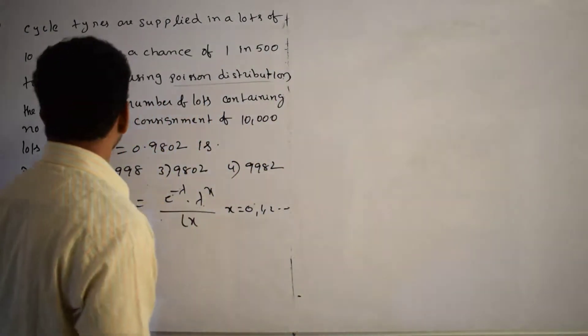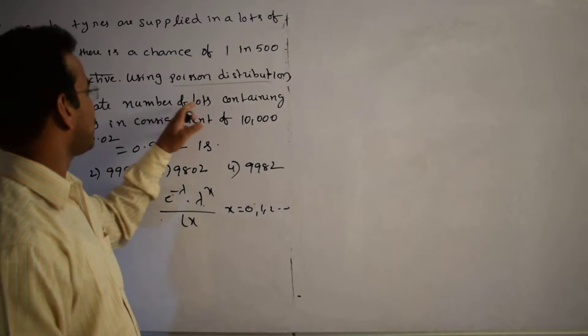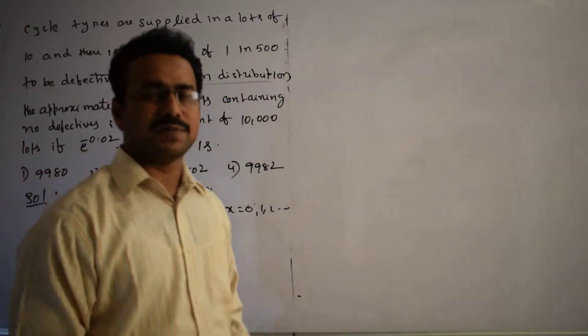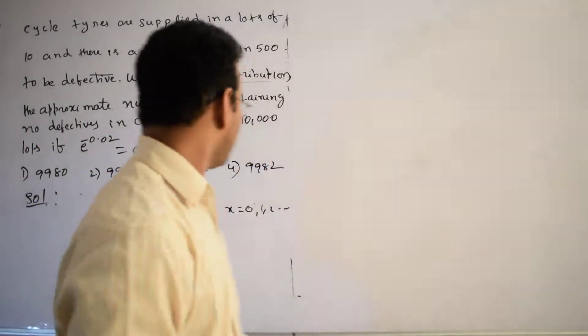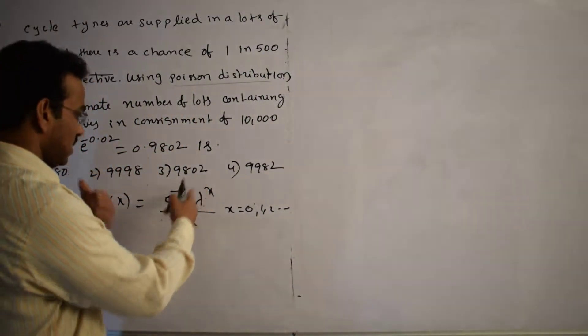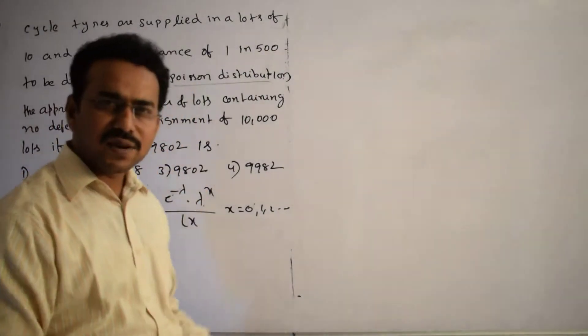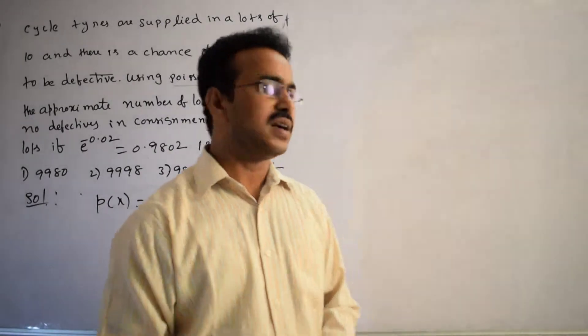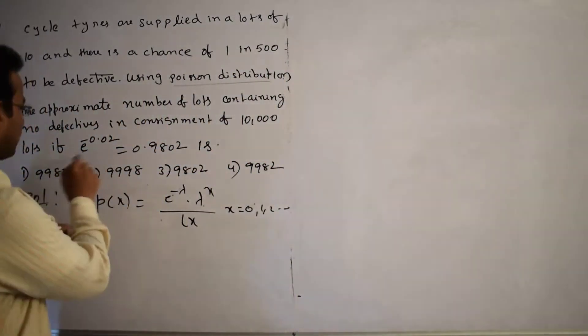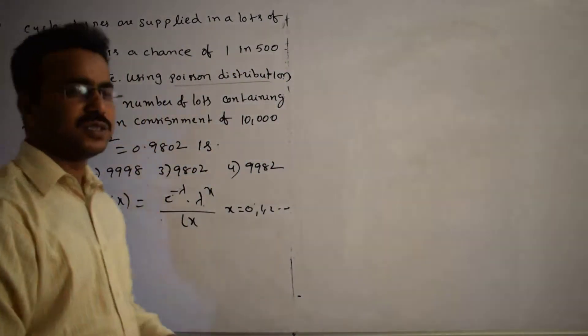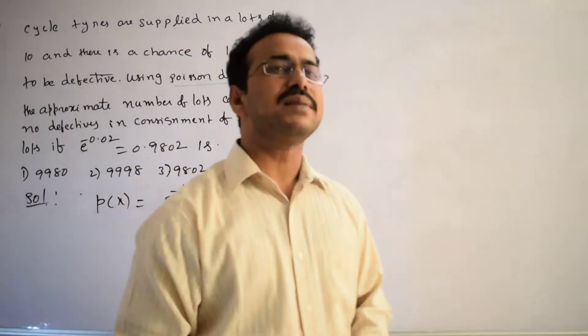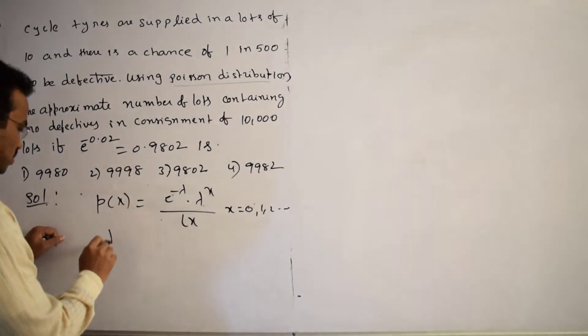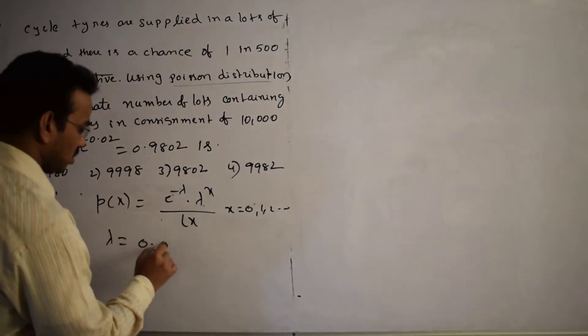First, what we need exactly is the approximate number of lots containing no defectives. No defective means x is 0. So when we put x equals to 0, automatically these terms will disappear. And then we only have to think about lambda. Already in the given question there is e power minus 0.02. So what is the lambda value here? Simply you can take lambda equals to 0.02.